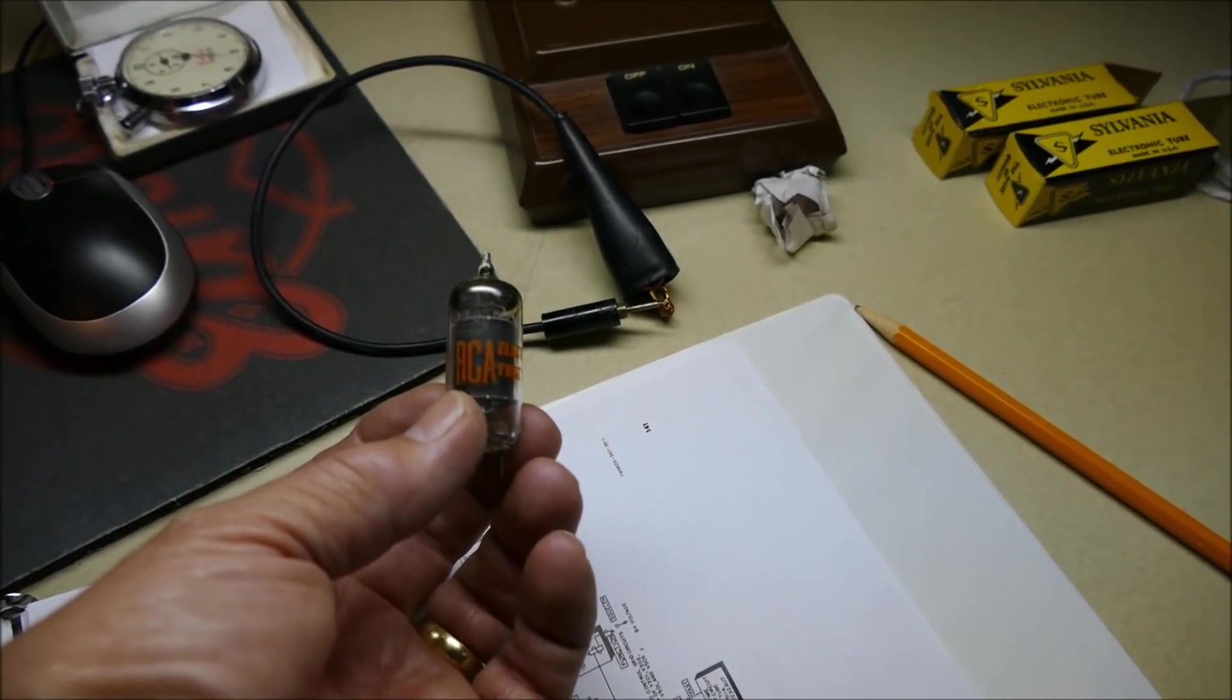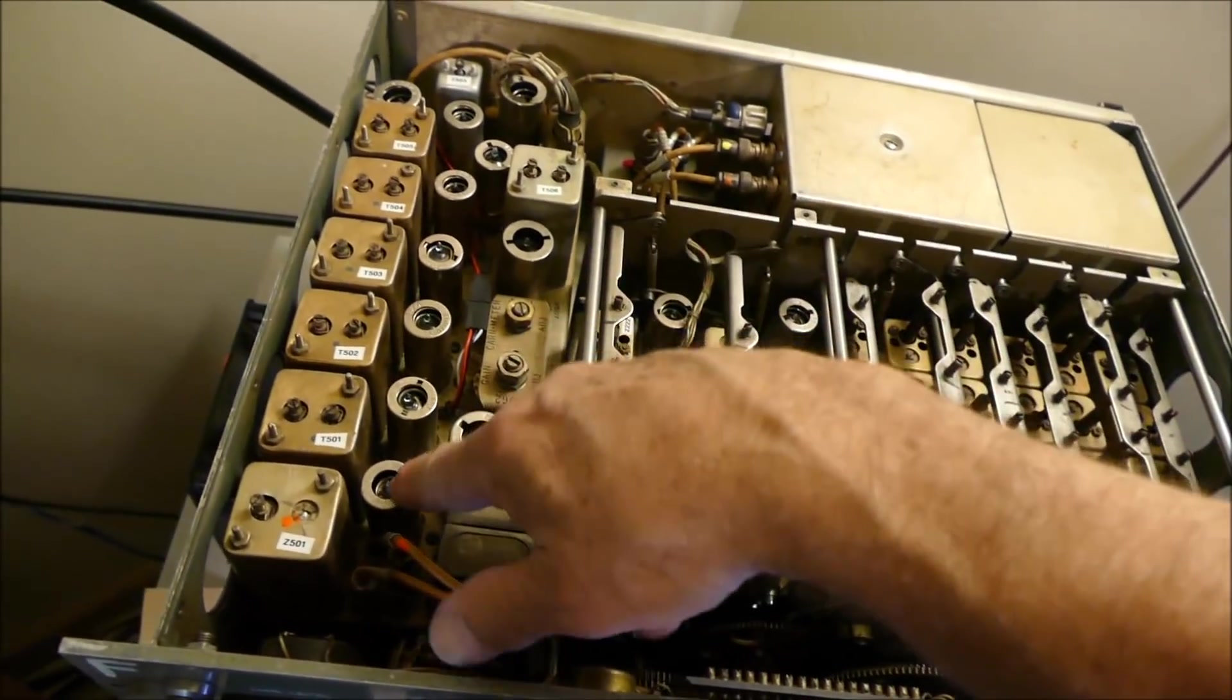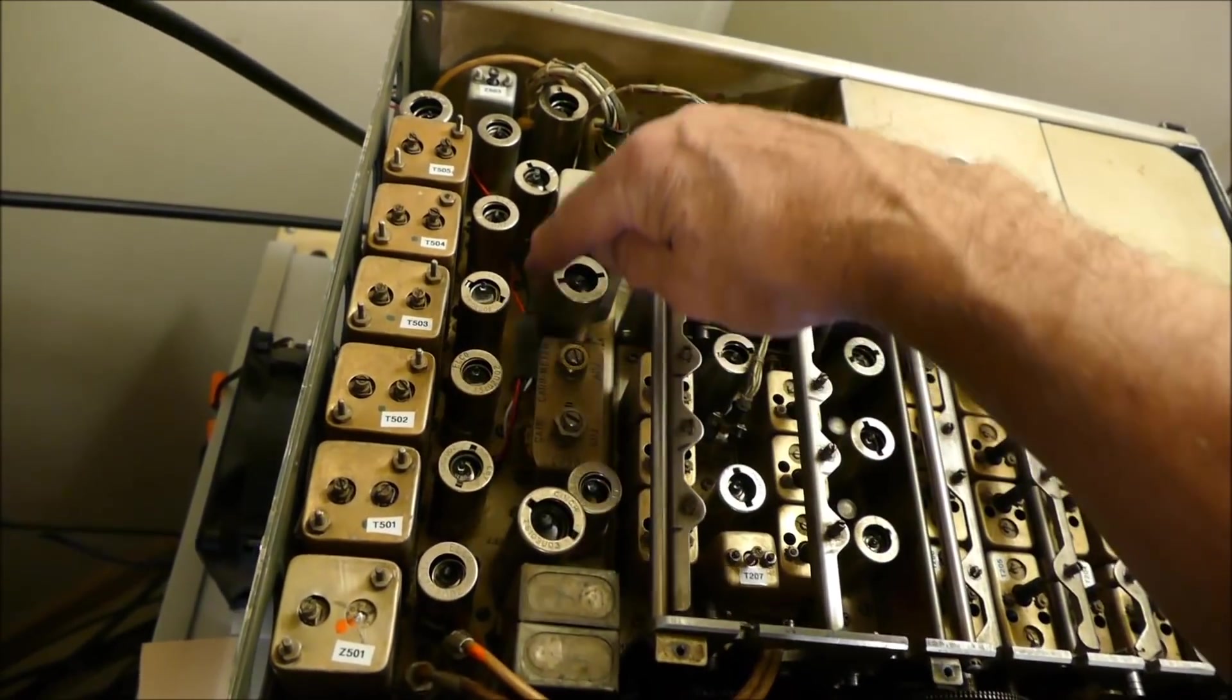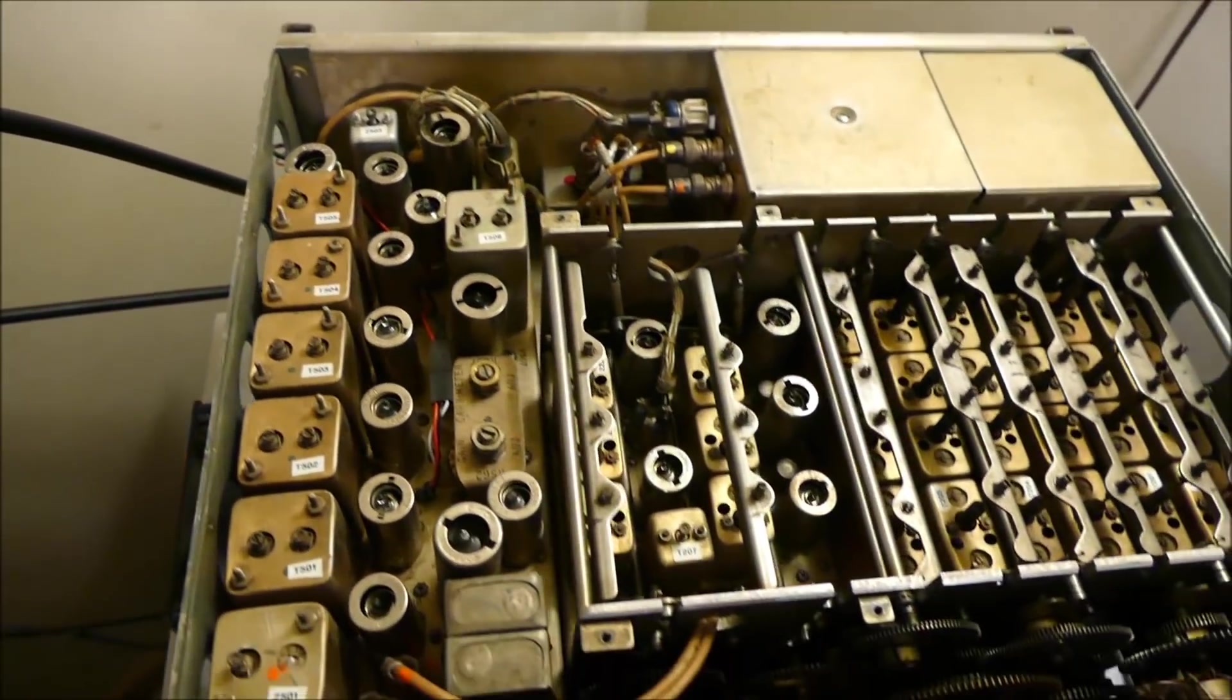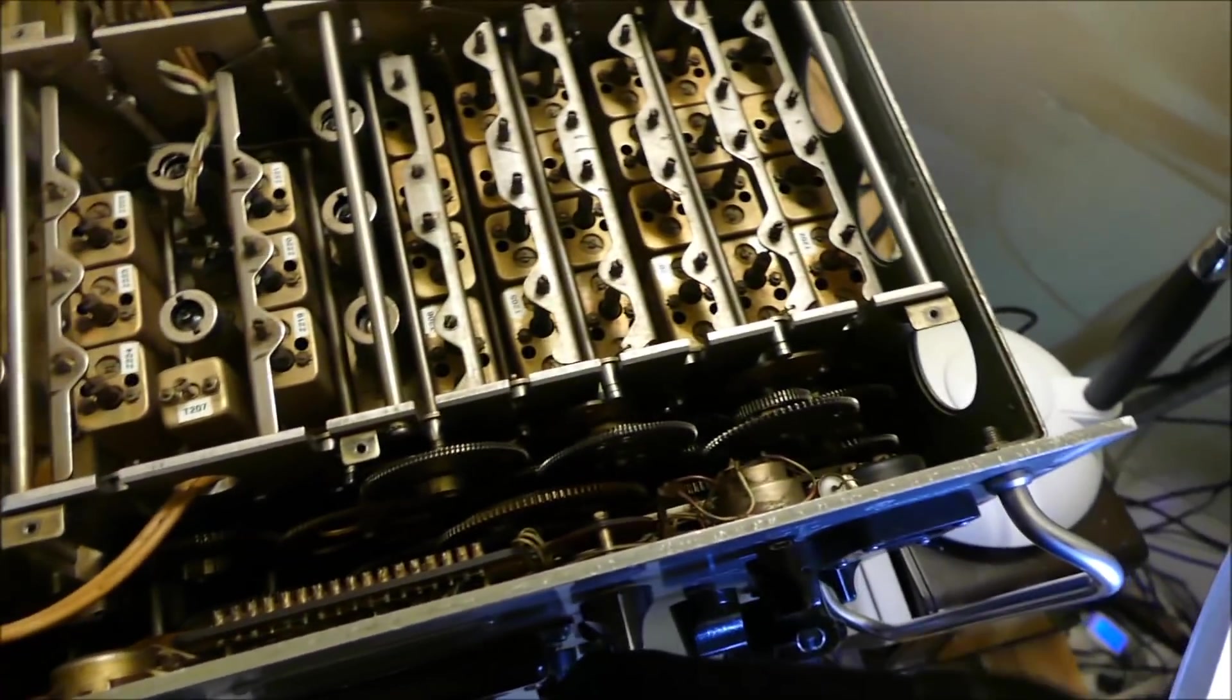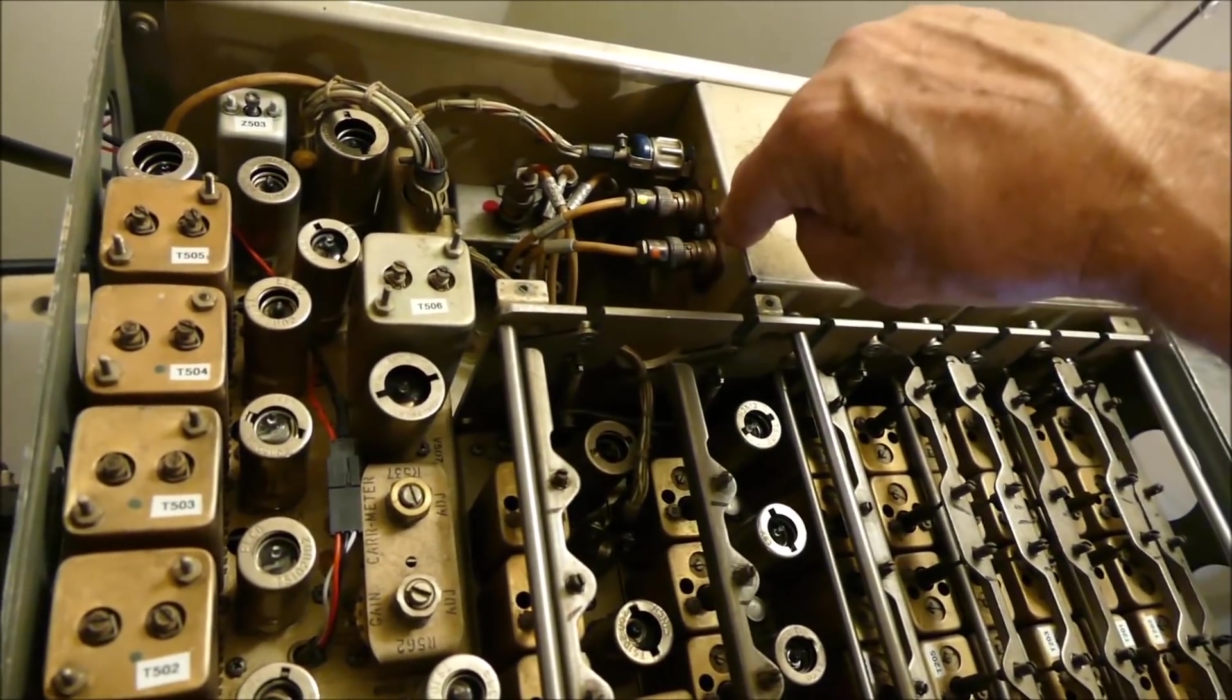They're all back in there in descending order from the best. These are different tubes right here - 12AU7s or something. You might notice I have labels on everything. I did that when I did an alignment. That's a good idea. I put dots on here - yellow dots, orange dots - using fingernail polish so you can get things back the way you want them.